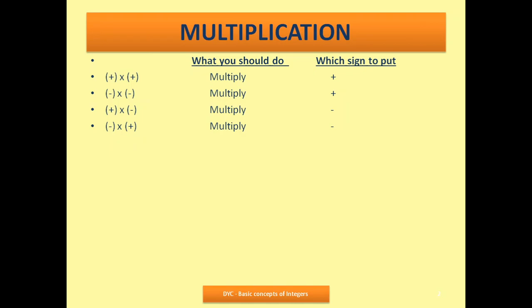For example, plus 2 multiplied by plus 3. What is 3 into 2? That's 6. Which sign do I put? Plus. So the answer is plus 6. Similarly, when there are two negatives — minus 3 times minus 2 — I multiply 3 by 2 to get 6. There are two minus signs, so I put a plus sign.